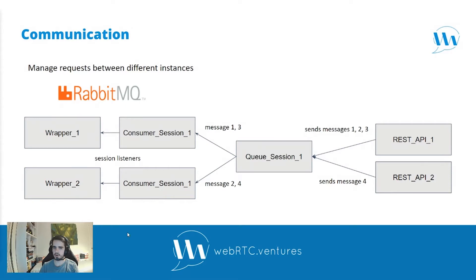We were using RabbitMQ for the communication, which already allows us to consume messages only once, even if there are multiple consumers of the same queue. So clients are sending messages to the REST API, and those messages are being sent to the session queue, and the messages would be consumed by the wrapper's listeners — not a single message would be consumed twice.